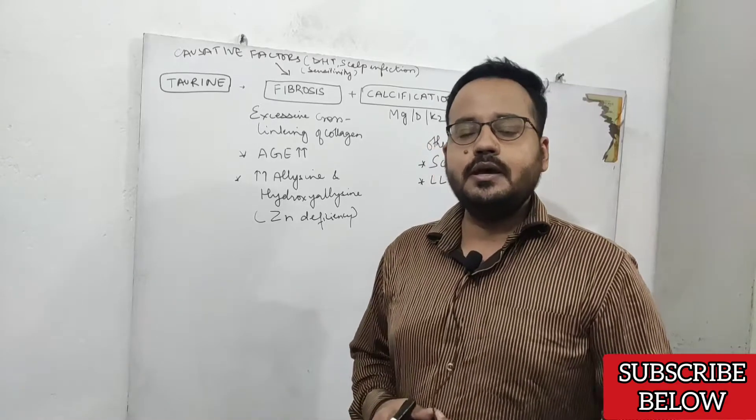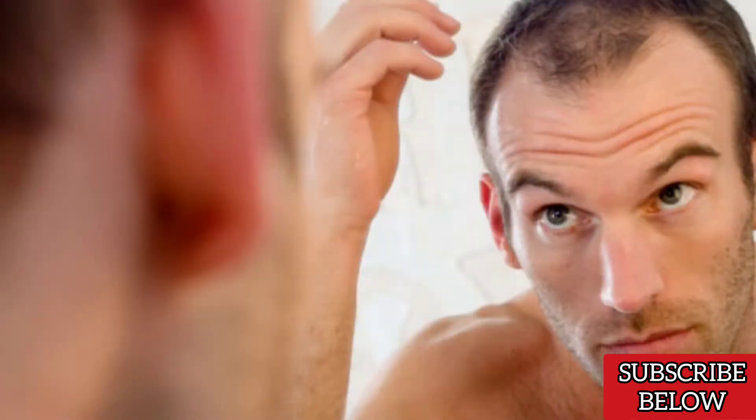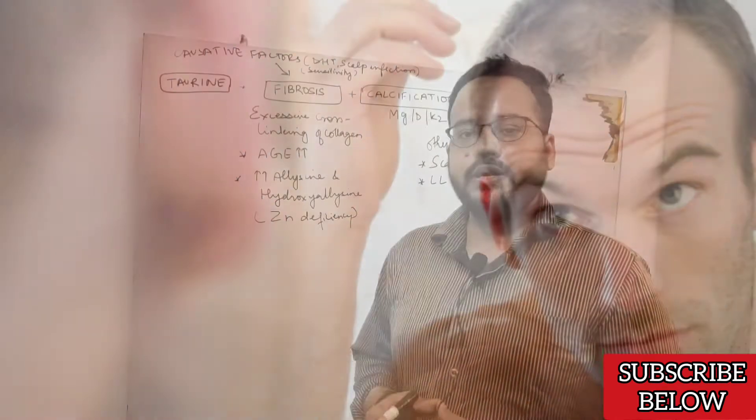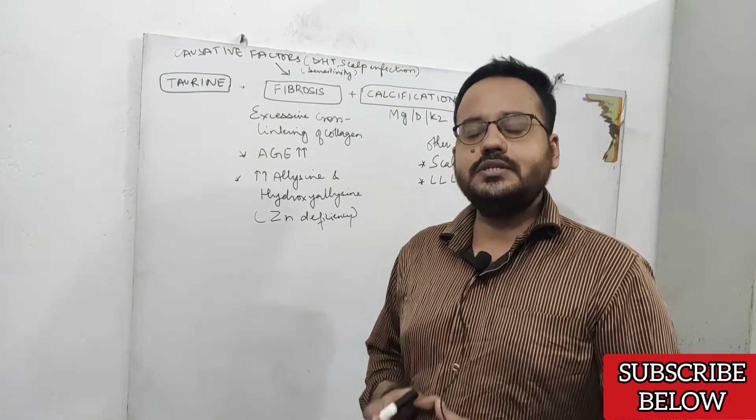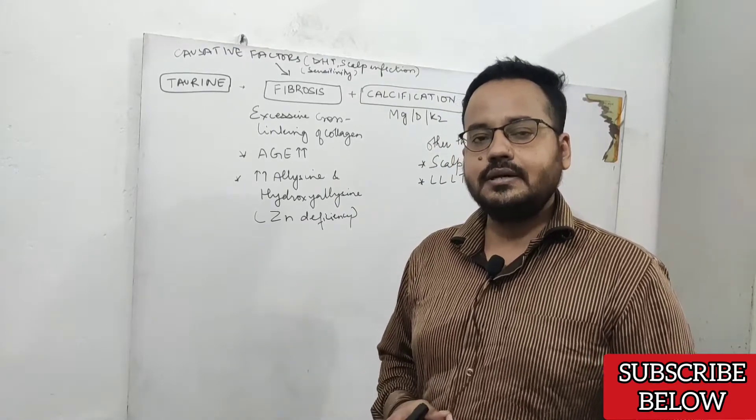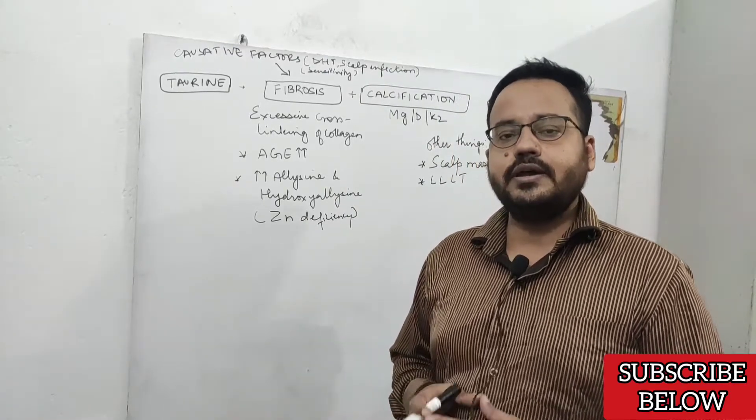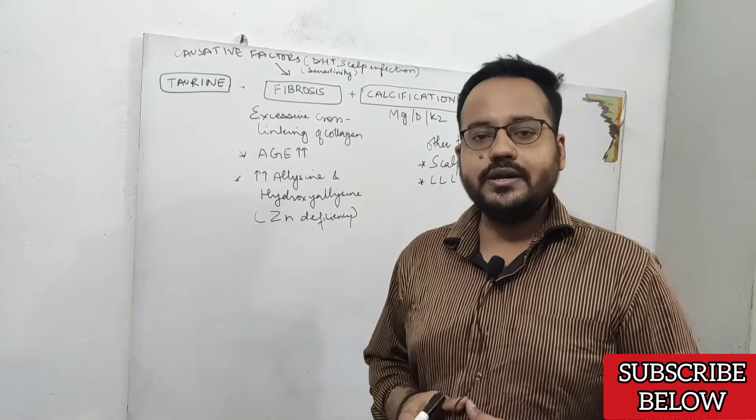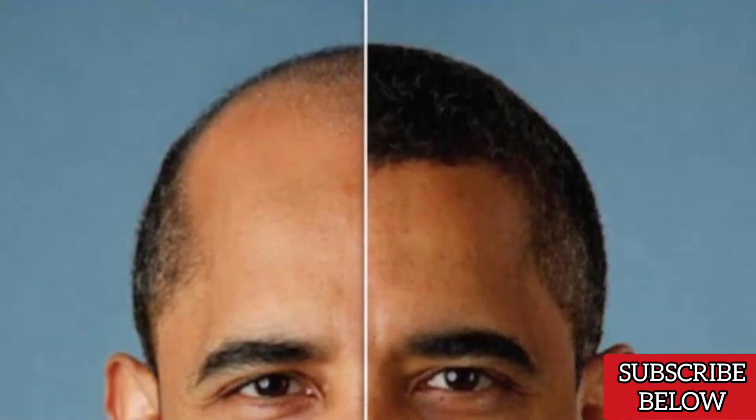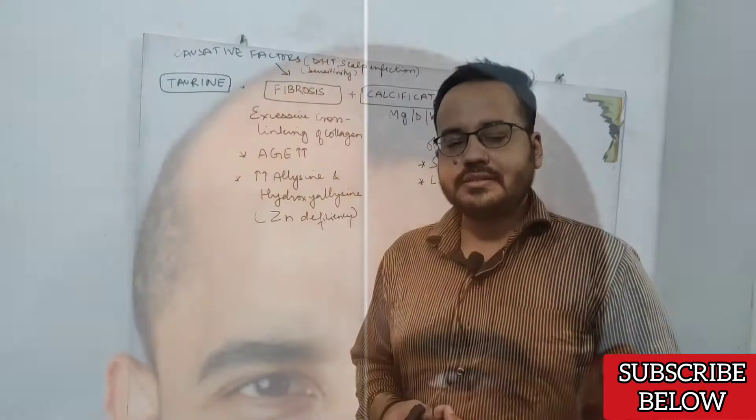One of the most important strategies in preventing hair thinning and regrowing your hair is improving scalp circulation. When your hair follicle is not receiving enough oxygen and nutrients, there is increased chance of hair thinning, hair fall, and your hair cannot regrow because there is a decrease in the energy phase.